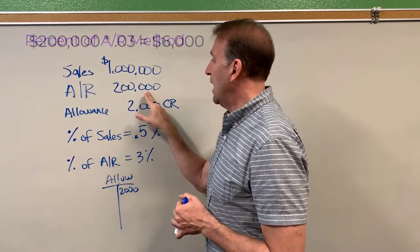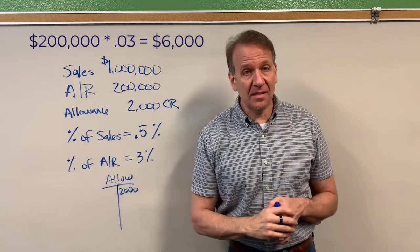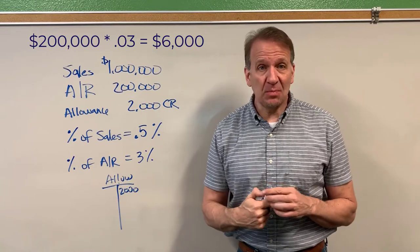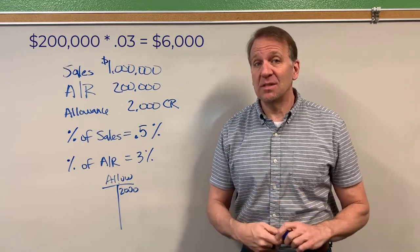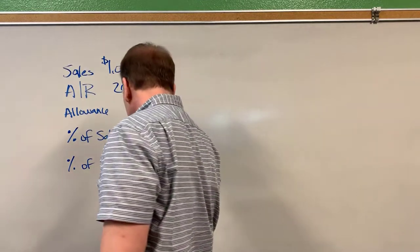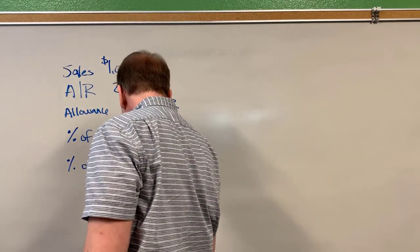Three percent of two hundred thousand is six thousand. Right now that is not the adjustment. Remember when we did a percent of sales that was the adjustment. No. When we're using the allowance method that is our ending balance.